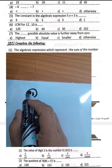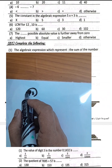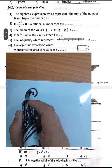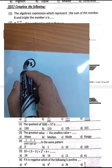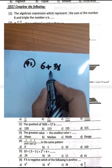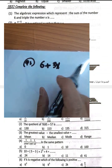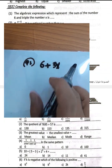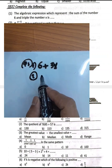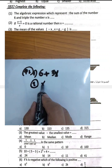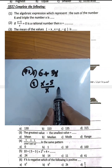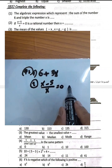Next question number 2: The algebraic expression which represents the sum of the number 6 and the triple of number x is 6 plus 3x. 'Treble' means multiplication by 3. Question number 2: if x minus 5 over x equals zero, then x will equal what?